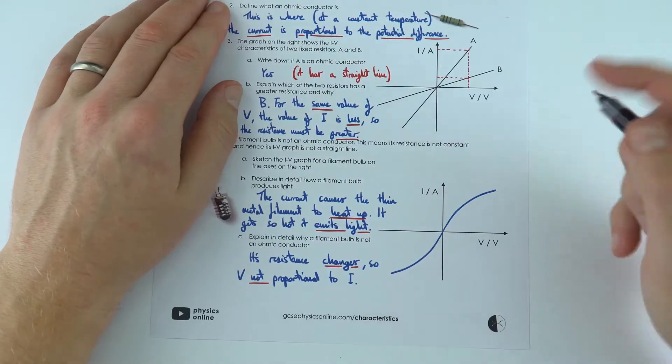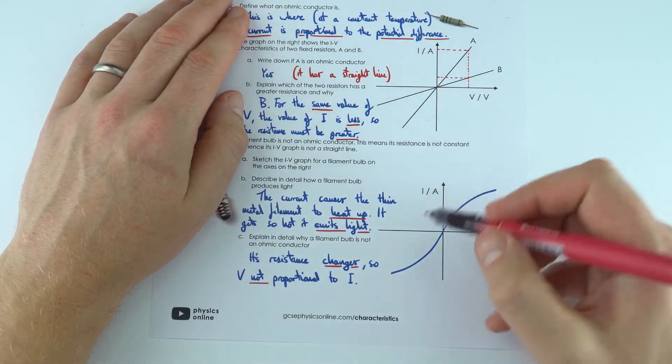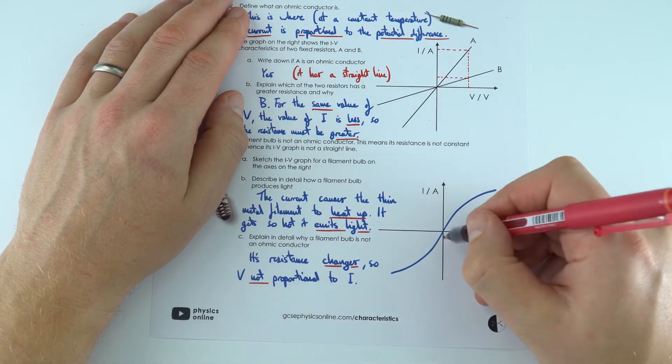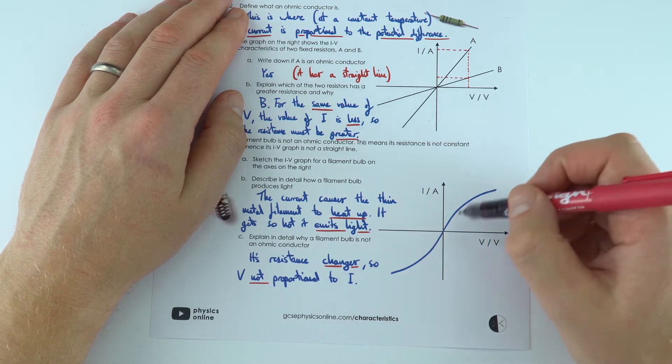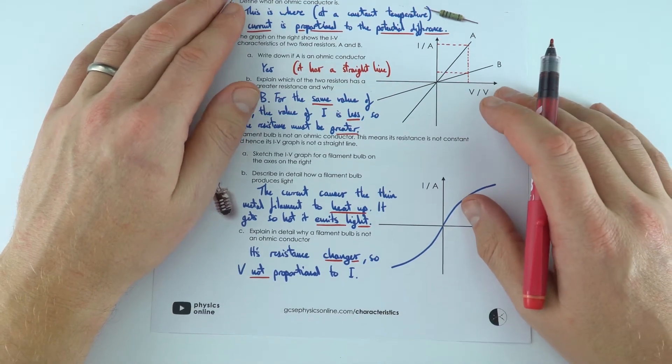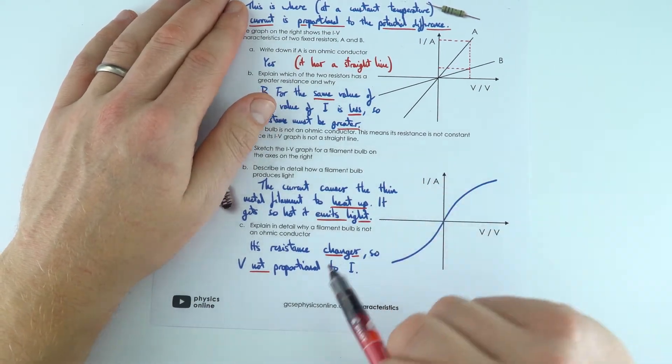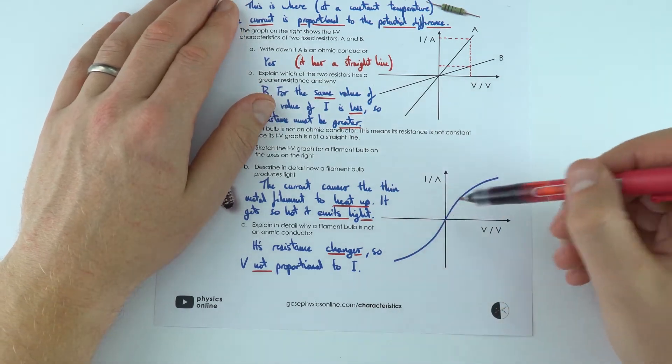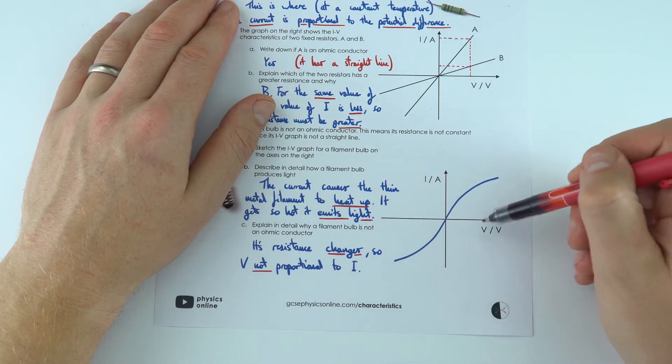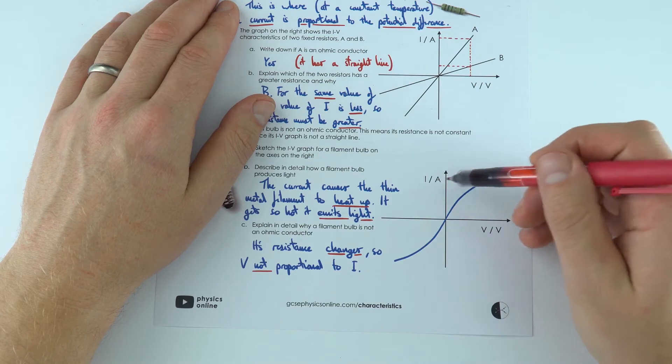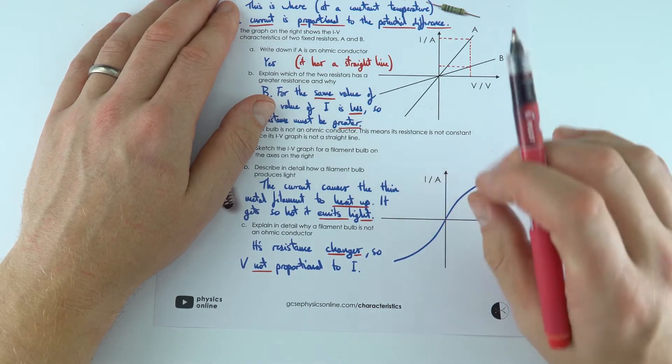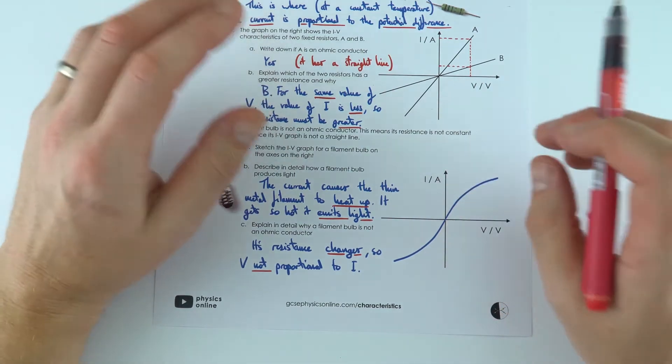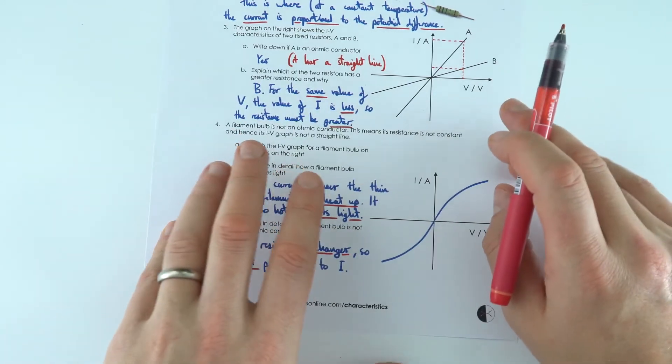But we also have this shape over here. This one here I just sketched it on to show there's this kind of S shape. It goes through the origin and this shows that actually the resistance changes. And it's not an ohmic conductor because V is not proportional to I. If you double the potential difference, we don't double the current going through it. And therefore this is not an ohmic conductor. And that's because as it gets hotter, the resistance increases.